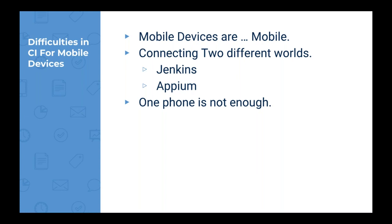Another difficulty of doing CI in the mobile domain is that one phone simply is not enough. You might test something on one phone and find it satisfactory, but that doesn't mean what you've written works on every other phone in the market. This market is so fragmented that you have to test on multiple phones to factor in different form factors, different CPU architectures, and different operating systems. Also, there is no standard robust and reliable framework in the market that you can use to achieve CI on mobile.